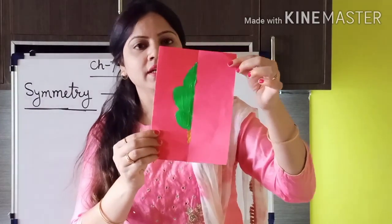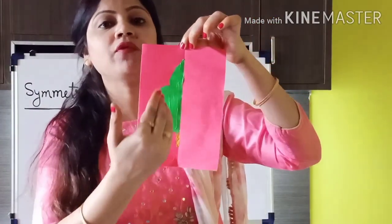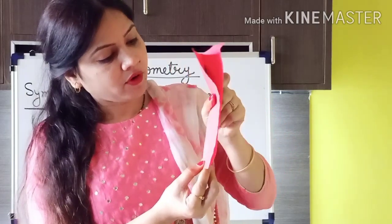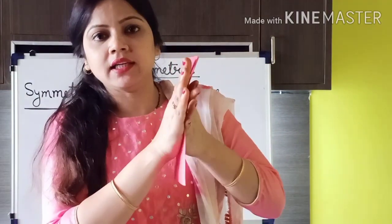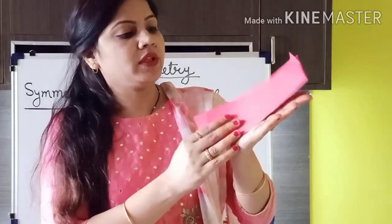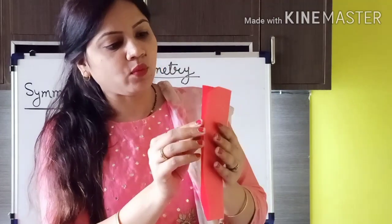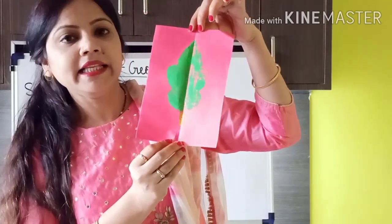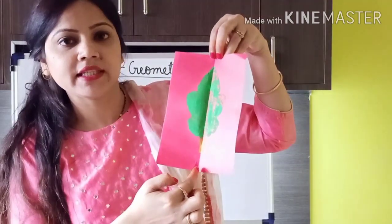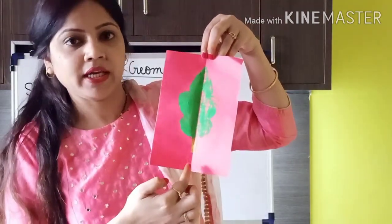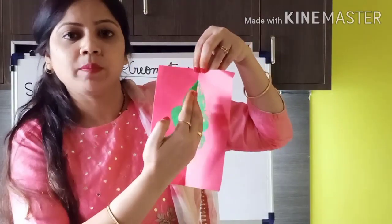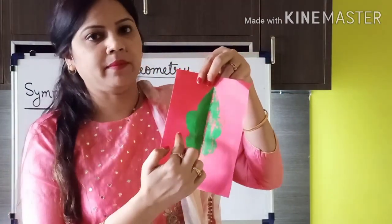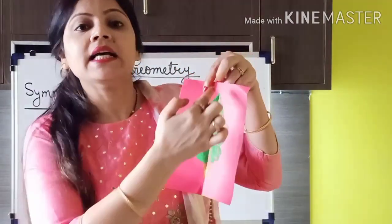I have drawn half of a shape, and we have to find out the full shape. We fold the paper from the middle, so the color spreads to the next half. Now we can see it is a picture of a leaf. The line from where we folded the paper is the line of symmetry — this line divides the figure into two equal parts. Both halves are mirror images of each other, and this line is the line of symmetry.